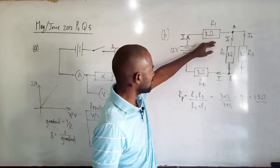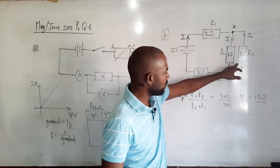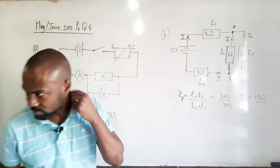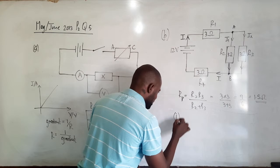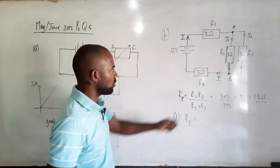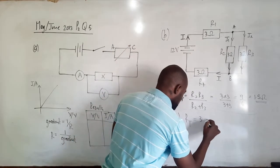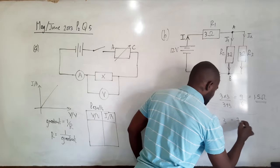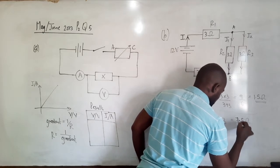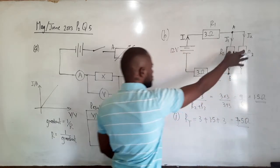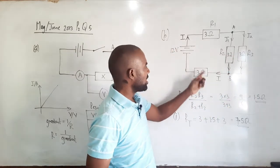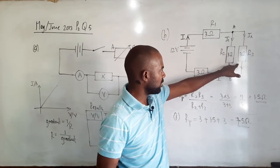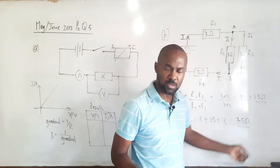Having found the parallel combination equals 1.5 ohms, the 3-ohm R1 is in series with the 1.5-ohm parallel combination, which is in series with the 3-ohm R4. Therefore, the total circuit resistance RT = 3 + 1.5 + 3 = 7.5 ohms.